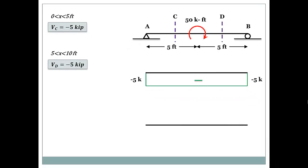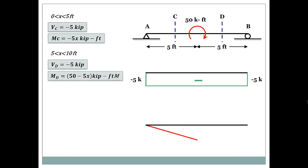Now for the moment diagram: MC is described by minus 5x. At X equals zero, MC equals zero. At X equals five, MC equals minus 25. So the moment diagram is a straight line from zero to minus 25 for the first half. For the second part, the equation is 50 minus 5x. At X equals 10, we get 50 minus 50 equals zero — confirming the moment at support B is zero.